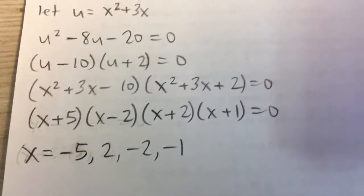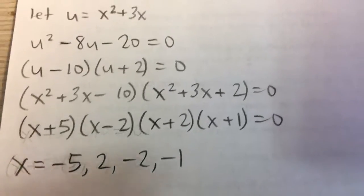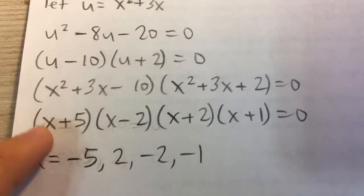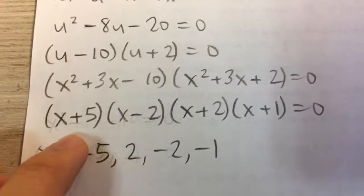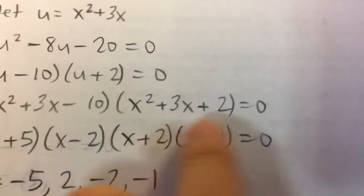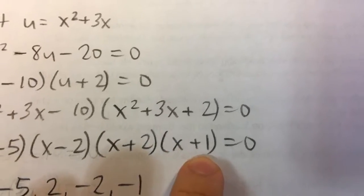Now we have two separate quadratic factors that we can factor themselves. This left part will become (x+5)(x-2).